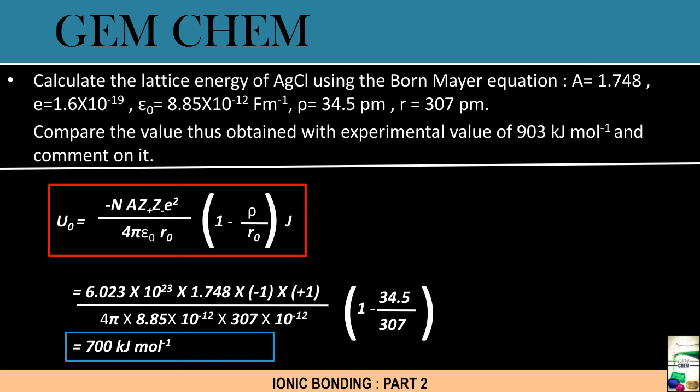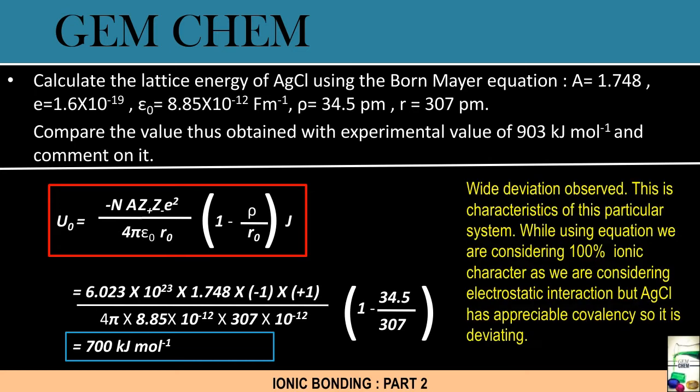Why this deviation occurs? This occurs because when we had derived the formulas, we have considered only ionic interactions. But in case of AgCl, there are certain percentage of covalency. The answer is: why deviation observed? While using equation, we are considering 100% ionic character as we are considering electrostatic interaction. But AgCl has appreciable covalency, so it is deviating.